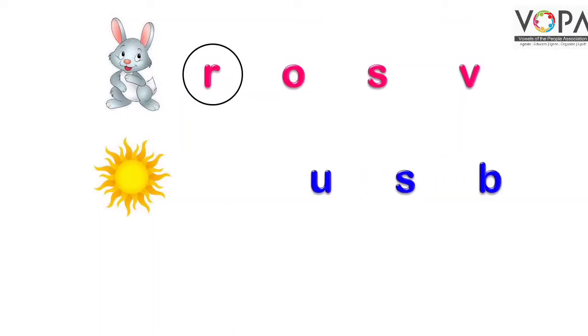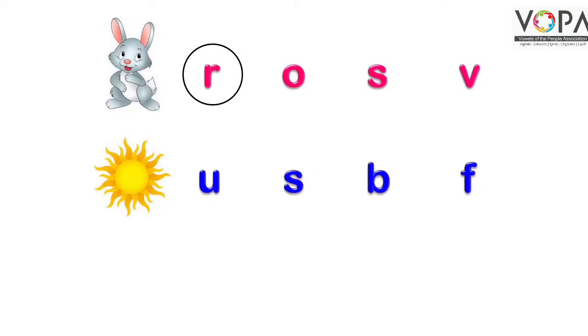अगली picture है Sun की — यानि सूरज। इसके आगे letters दिये गए हैं: U for Umbrella, S for Sun, B for Ball, और F for Fan। हमें पता है कि Sun इस word की शुरूआत S से होती है, इसलिए हम लोग S को encircle करेंगे।